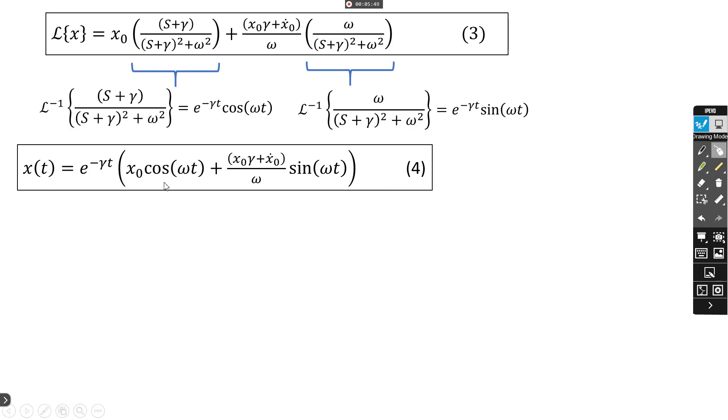This solution depends on trigonometric cosine and sine. We need to simplify as amplitude A times exponential negative γt times sine(ωt + φ), where φ is the phase angle, and we denote x₀ by α and (x₀γ + x dot₀)/ω by β.